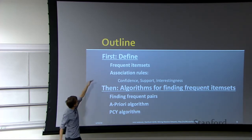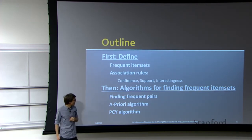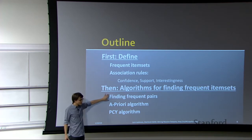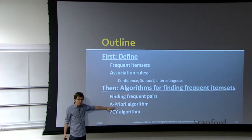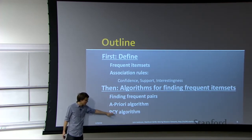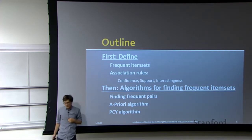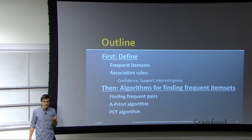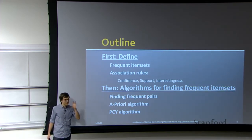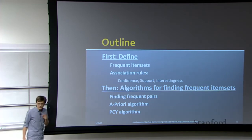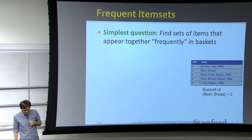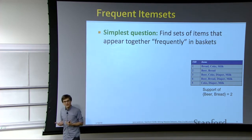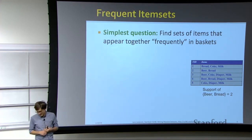Here is the outline for the rest of the lecture. I will first define what I mean by frequent itemsets and association rules, and how I measure the quality of an association rule in terms of support, confidence, and interestingness. After that, we'll talk about algorithms to identify and compute these rules and itemsets.